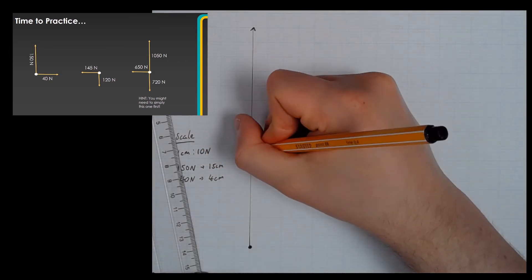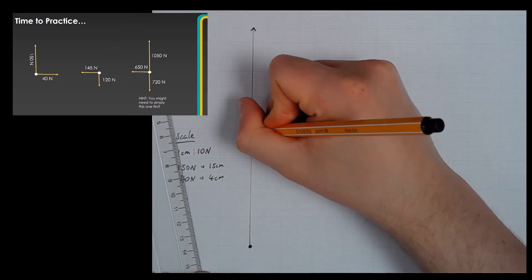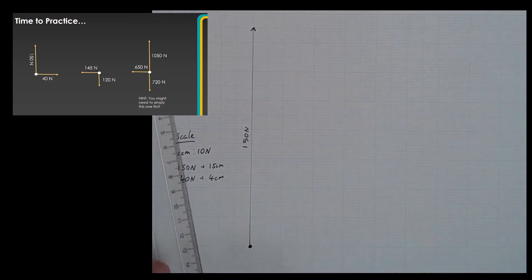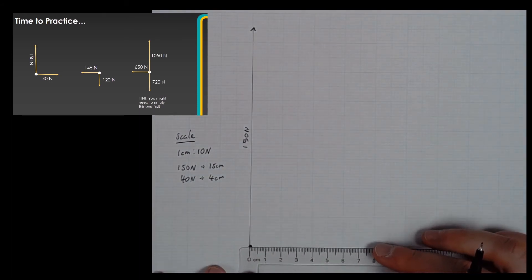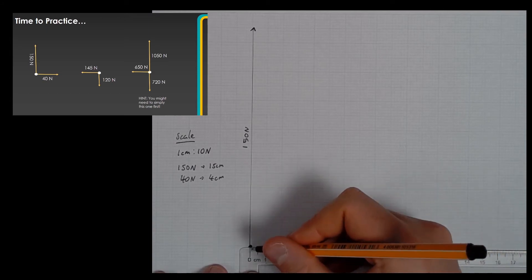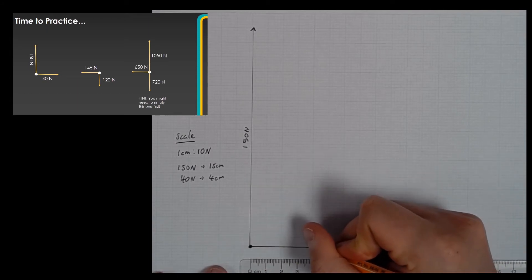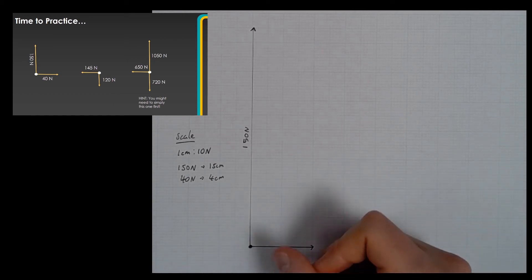I should also label that with 150 newtons. And then I'm going to draw a force to the right — this is going to be 4 centimetres long to represent my 40 newton line. I should also label that as well.